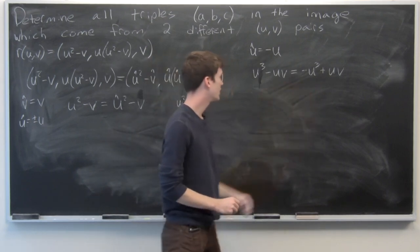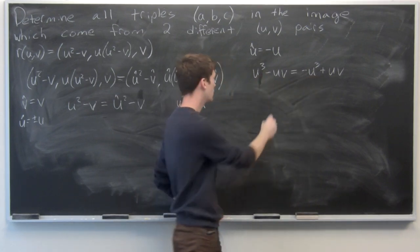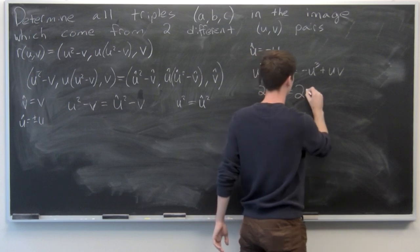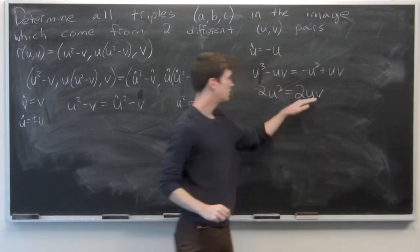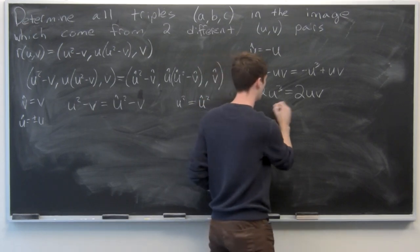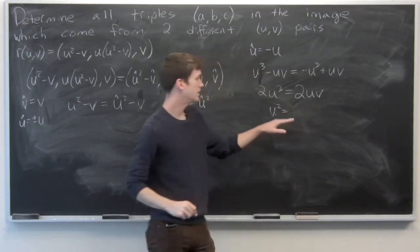Let's bring the u-cubes together. So we get 2u-cubed is equal to 2u-v, divide both sides by 2 and u, we get u-squared is equal to v.